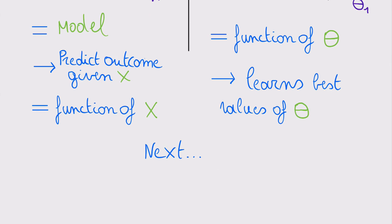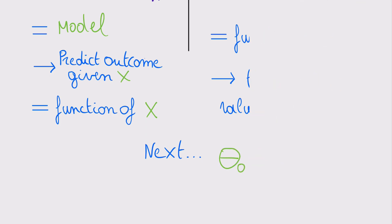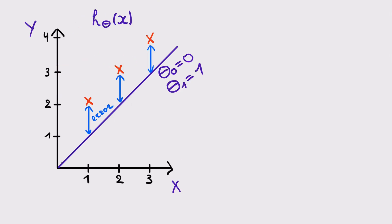In the next part, we'll see what happens if we don't assume theta 0 is equal to 0. Looking at this graph, the hypothesis is not optimal for the training set — there are still large errors between the real values and the predictions. To give accurate predictions we would like to optimize both parameters, which would allow us to get a line through all data points with a cost of 0. In this case the optimal parameters would be theta 0 equal to 1 and theta 1 equal to 1.